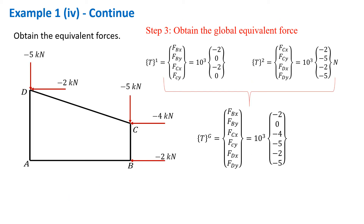After obtaining the equivalent nodal forces for each applied pressure at the different edges, the next step is to assemble the global equivalent nodal forces. We have T1 from edge BC and T2 from edge CD. Since both matrices contain components FCX and FCY, we must sum those values. The summed FCX and FCY appear in the global equivalent nodal force matrix, while the remaining values stay the same.